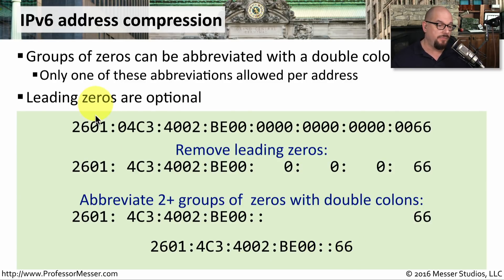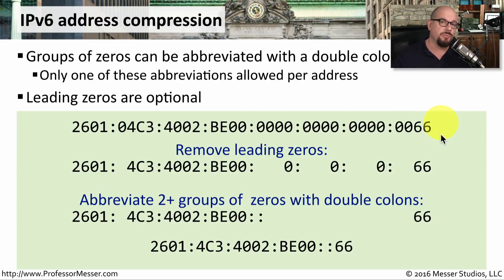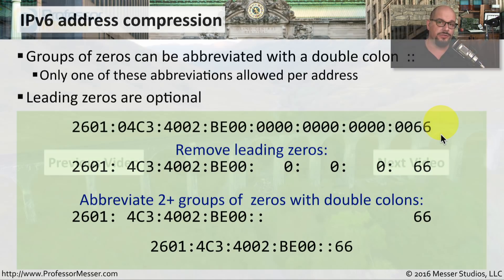That is a big difference from the original IPv6 address we started with. Whenever you work with routers, workstations, and switches, you'll see these abbreviated IPv6 addresses because they're much easier to write and manage in configurations. You should become accustomed to switching back and forth between a full IPv6 address and its compressed version.